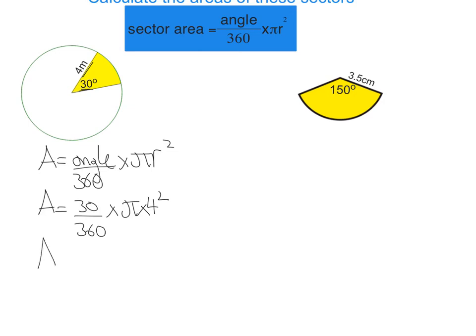I'll put that all into my calculator in one go. You just put in 30 divided by 360 times pi times 4 squared. If you do that, you're going to get 4.18879... So giving this to three significant figures, it'd be 4.19 metres squared.